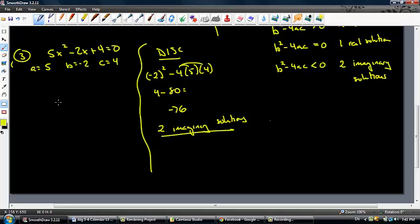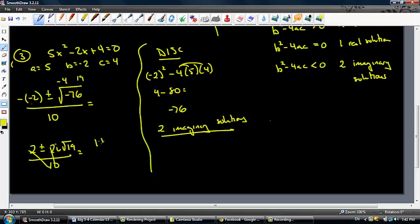Here we go. Negative B plus or minus the square root of negative 76 all over 2A, which is 2 times 5, which is 10. Well, the square root of negative 76 is, this is really 4 and 19. So what I've really got is 2 plus or minus 2i rad 19 over 10. Those are going to cancel each other out. I end up with 1 plus or minus 2i rad 19 over 5. And that's pretty much the quadratic formula and the discriminant. We'll see you next time.